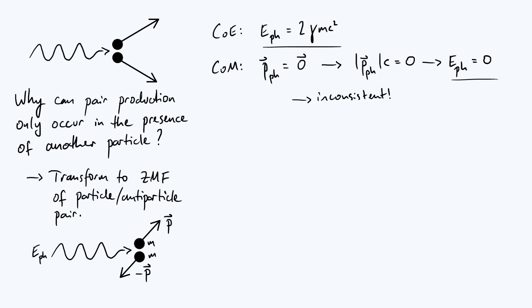So our conclusion is that the process we've been describing cannot actually happen because it can't satisfy conservation of both energy and momentum at the same time. Now as I sort of alluded to earlier, the solution to this is that there needs to be some other particle nearby for the photon to interact with. So I've just added some other particle there, let's call it particle x.